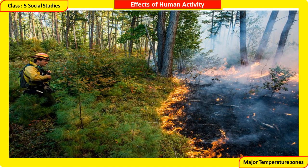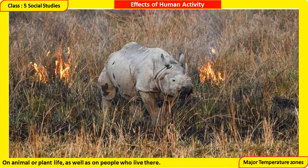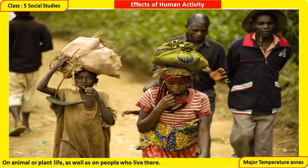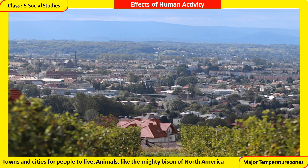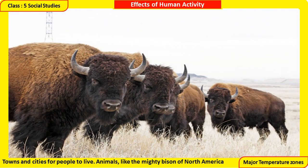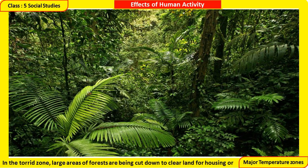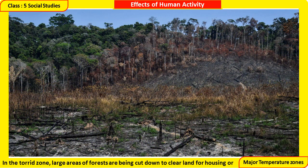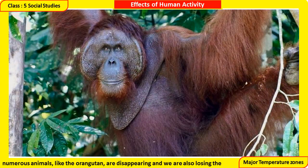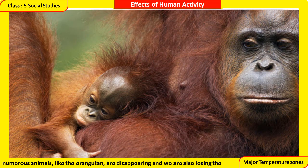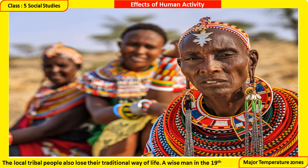Effects of Human Activity: human beings sometimes interfere with nature for different reasons, and this has an impact on animal or plant life, as well as on people who live there. In the temperate zone, large areas of grasslands were converted into farmland and towns and cities. Animals like the mighty bison of North America, which lived there in thousands, were reduced to very small numbers. In the torrid zone, large areas of forests are being cut down to clear land for housing or agriculture and to use the valuable timber. The natural habitats of numerous animals like the orangutan are disappearing, along with smaller creatures, plants, and the traditional way of life of local tribal people.